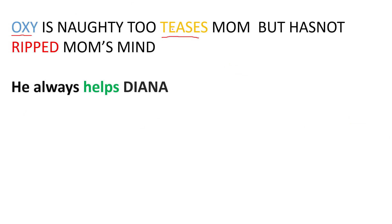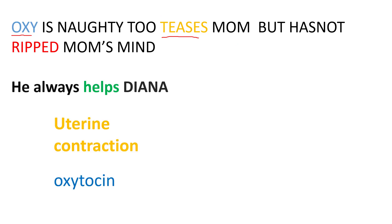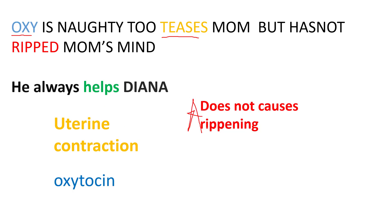Now Oxy is the brother of Diana. Oxy is naughty too — he teases mom, meaning he also causes irritation in the uterus, and irritation means contraction. So Oxy means oxytocin. Teasing means uterine contractions. But he has not deprived mom's mind — meaning oxytocin does not cause cervical ripening. This is a very important point: oxytocin does not cause cervical ripening.